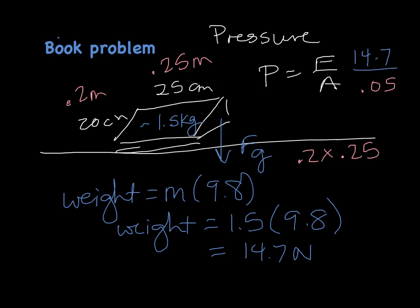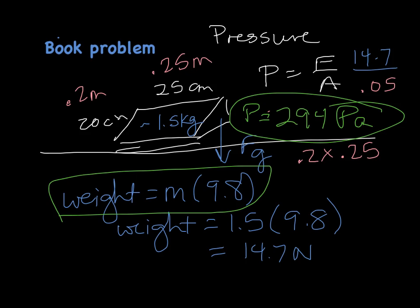And then we go ahead and we do our pressure calculation. And we take 14.7, divide by .05, and we get that our pressure is 294. Now what's the unit for a pressure? Correct, Pascals. 294 Pascals. So what did we have to do? We had to find the force, so we had to find the weight of the book. We had to find the area, because pressure is force divided by area. And then we took that force and divided by the area.